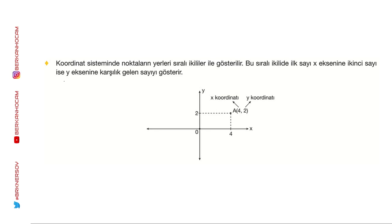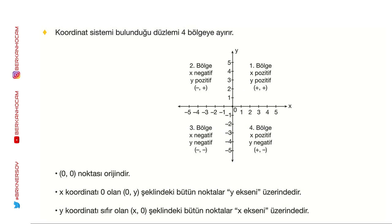Koordinat sisteminde yerleri sıralı ikiller ile gösteriyoruz. Bu sıralı ikili; ilk sayı x eksenine, ikinci sayı y eksenine karşılık gelen sayıdır. Önemli nokta: her zaman x önce yazılır. Noktayı belirtirken harf büyük harfle gösterilecek. Koordinat sistemini dört bölgeye ayırıyoruz. Saat yönünün tersine ilerliyor: birinci bölge, ikinci bölge, üçüncü bölge ve dördüncü bölge.